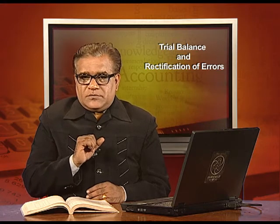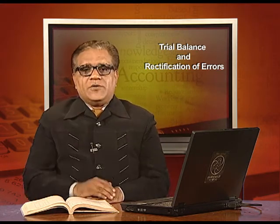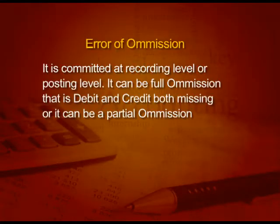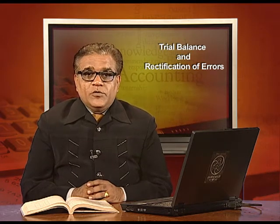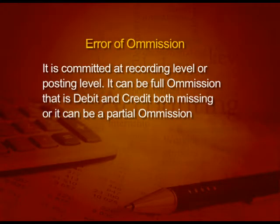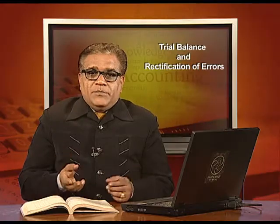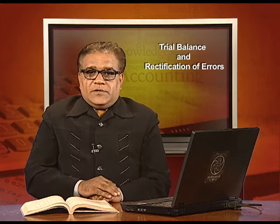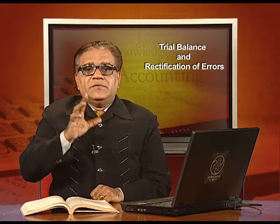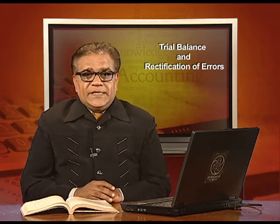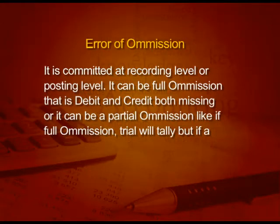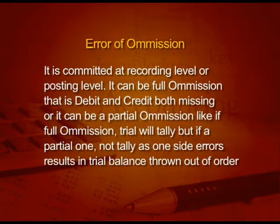Coming to the second type of error: error of omission. It is committed at recording level or posting level and can be full omission or partial omission. In case of full omission, both aspects — debit and credit — are missing, so the trial will tally. But in case of partial omission, like you recorded one aspect debit and forgotten the credit or vice versa, the trial will not tally.